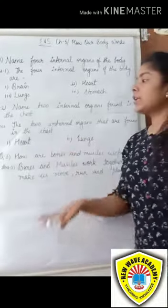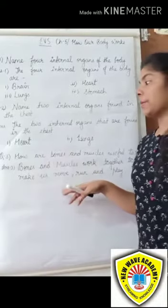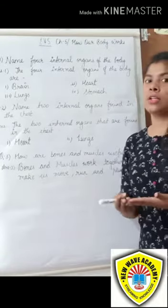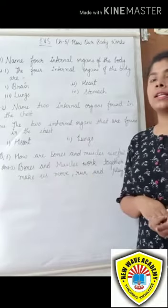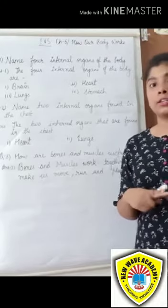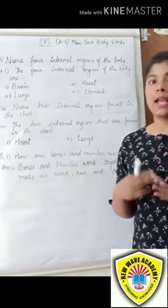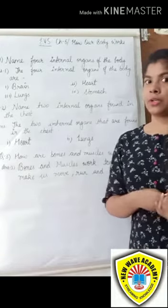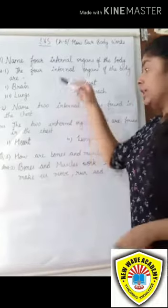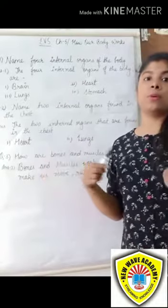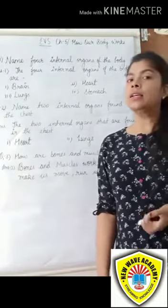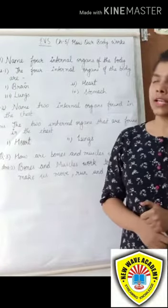These are the three questions from chapter 5, 'How Our Body Works.' We covered internal organs — brain, heart, stomach, lungs — and external organs like eyes, nose, hands, and head. Copy these three questions in your writing and complete all the work. Thank you so much, students.